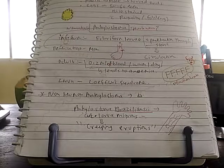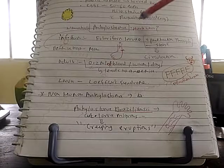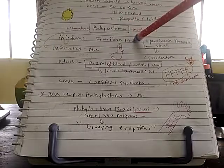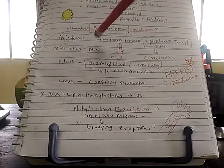Ankylostoma duodenal is a tissue nematode, also known as hookworm. The infective form of Ankylostoma duodenal is philariform larva. It penetrates through skin, and the definitive host is man.